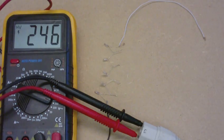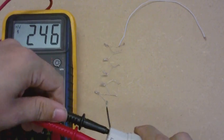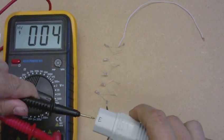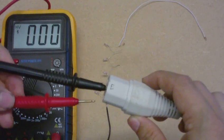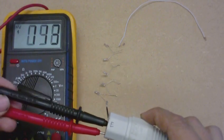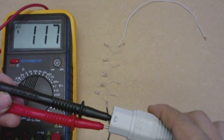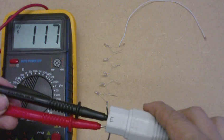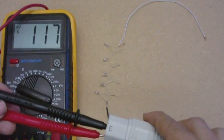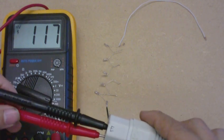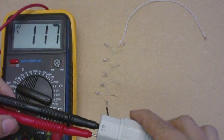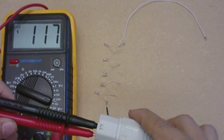If I connect between the earth, or the ground, or whatever you want to call it, and the live, as you can see on the meter, 117 volts. Now I thought that would be the 240 or odd volts.